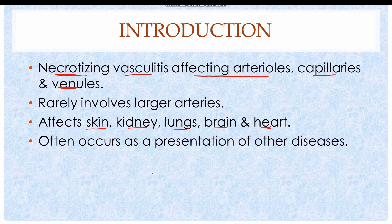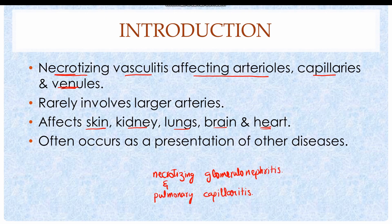The most common presentations are necrotizing glomerulonephritis and pulmonary capillaritis. Necrotizing glomerulonephritis occurs as a result of damage to renal vessels, whereas pulmonary capillaritis occurs due to damage to the pulmonary capillaries. Necrotizing glomerulonephritis is positive in almost 90% of patients affected by microscopic polyangiitis. The disease often occurs as a presentation of certain other diseases such as HSP or Henoch-Schönlein purpura and mixed cryoglobulinemia.